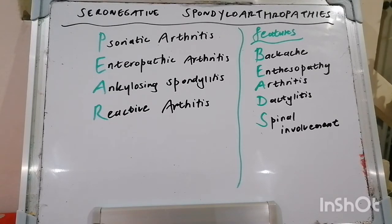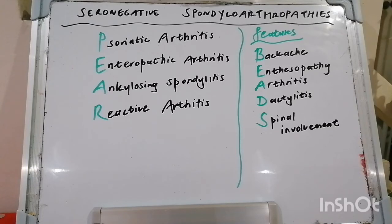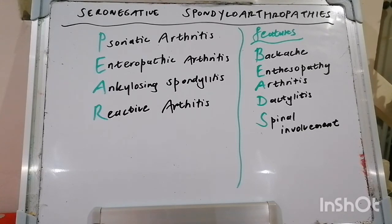In terms of examination of the back, the principles are inspection, range of motion, palpation, special tests, and looking for any extra-articular changes. In inspection of the back, we're basically looking for swelling or erythema, atrophy, scars, loss of thoracic kyphosis, and cervical or lumbar lordosis. Then looking at range of motion, you want to check the gait and flexion of the spine, extension, lateral bending, and rotation.